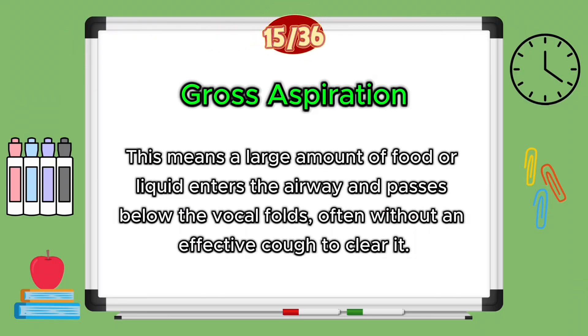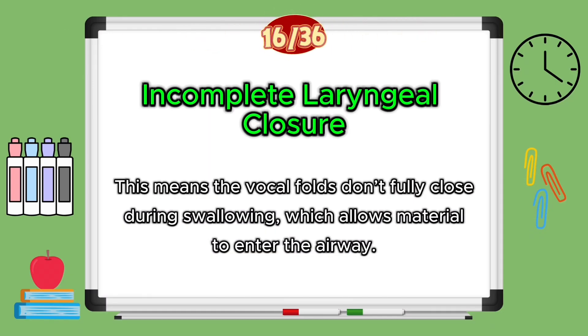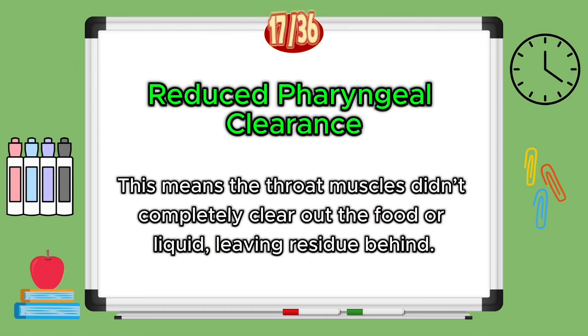Gross aspiration means a large amount of food or liquid enters the airway and passes below the vocal folds, often without an effective cough to clear it. Incomplete laryngeal closure means the vocal folds don't fully close during a swallow, which allows material to enter the airway. Reduced pharyngeal clearance means the throat muscles do not completely clear out the food or liquid, leaving residue behind.